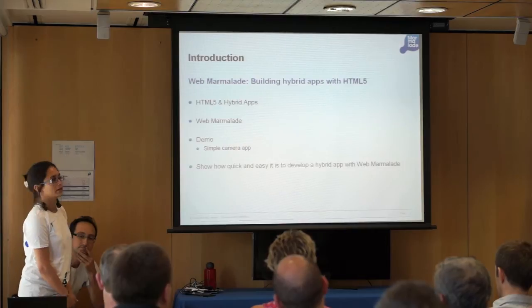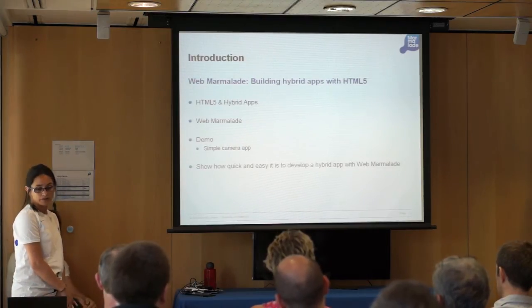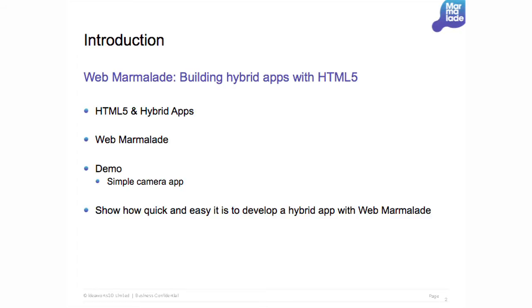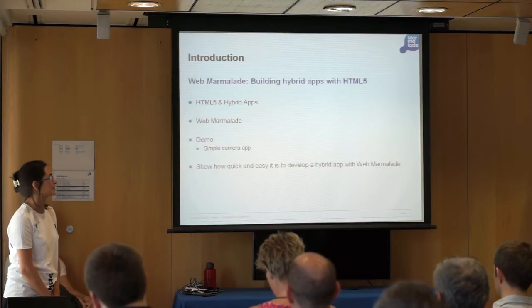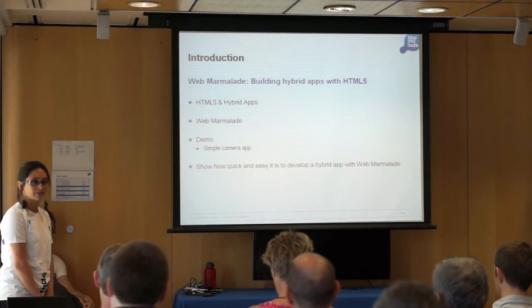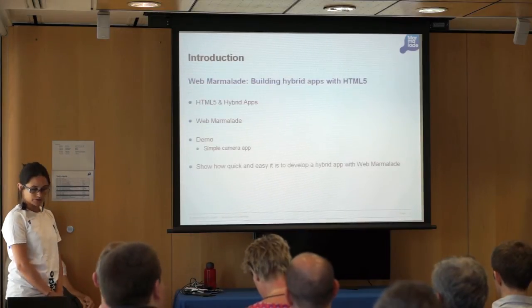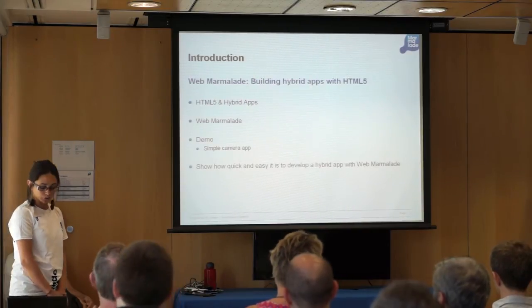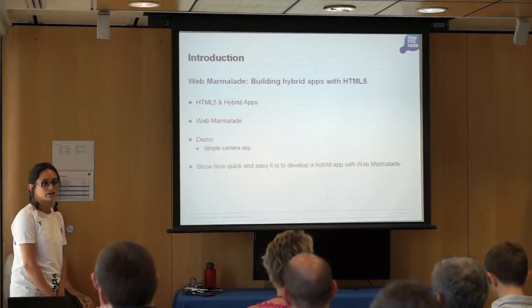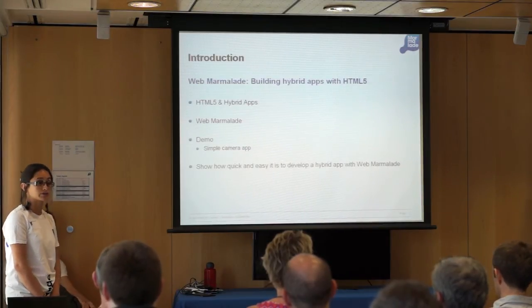I'll begin by telling you a little bit about what HTML5 is and what hybrid apps are. I'll then go on to introduce Web Marmalade and how it can be used by web developers to develop hybrid apps. Then we're going to move on to a demo which Andrew's going to do — he's going to create a camera app from scratch, show you how to edit the template files, add the camera functionality, make full use of Web Marmalade using the simulator, an integrated debugger, and how to deploy to a device.